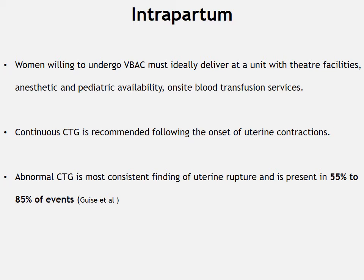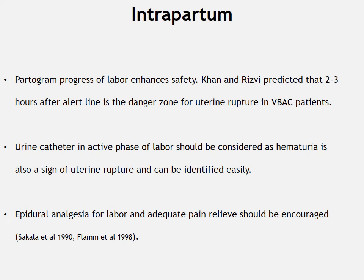Women willing to undergo vaginal birth after cesarean section are considered high risk and must ideally deliver at a unit with theater facility, anesthetic and pediatric availability, and on-site blood transfusion services. Continuous CTG is recommended following the onset of uterine contractions. Abnormal CTG is the most consistent finding of uterine rupture and is present in 55 to 85% of events. A partogram to track progress of labor enhances safety and should be plotted timely. A urinary catheter in the active phase of labor should be considered, as hematuria is also a sign of uterine rupture.